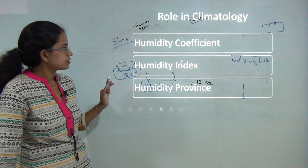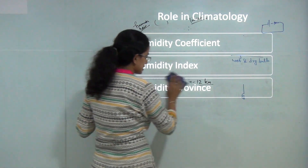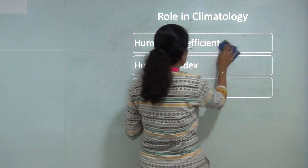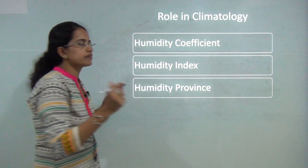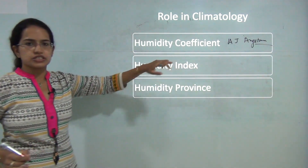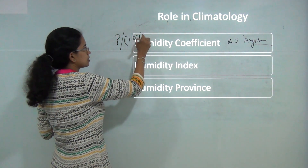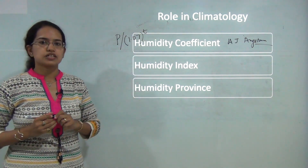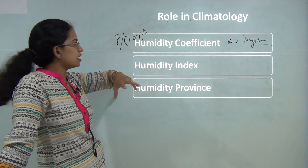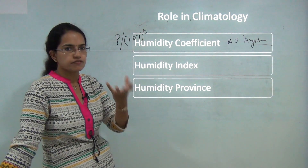Next is the role of humidity in climatology. We will understand three basic things: the humidity coefficient, humidity index, and humidity province. The humidity coefficient was given by Angstrom, who explained it as precipitation divided by 1.07 raised to T, where T is the mean temperature in degrees Celsius. This coefficient helps to analyze the precipitation effectiveness in a given region.